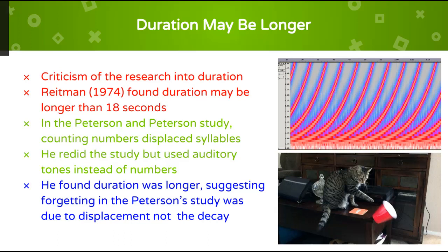He argued that in the Peterson and Peterson study, the counting of numbers was displacing or overwriting the syllables participants were meant to remember. He redid the study but used auditory tones instead of numbers, so that displacement would not occur, as general sounds don't interfere with verbal rehearsal. He found duration was longer, suggesting the forgetting in the Peterson study was due to displacement, not the decay of short-term memories.